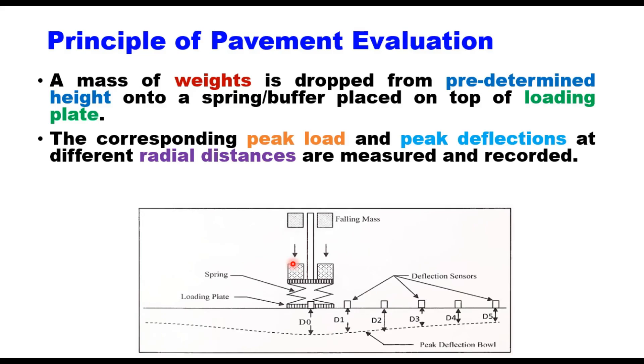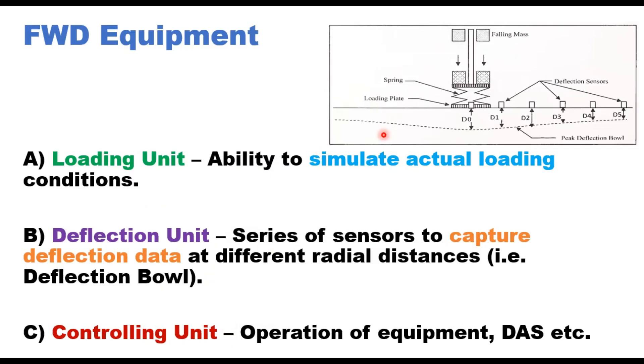The basic principle of pavement evaluation using FWD is that you have a mass of weight which is dropped from a predetermined height onto a spring placed on top of a loading plate and then corresponding peak load and peak deflections at different distances are measured and recorded so that you can draw this peak deflection bowl. It has a loading unit that has the ability to simulate actual loading condition. Deflection unit, a series of sensors to capture deflection data at different distances so that you can capture this deflection bowl and a controlling unit to record all this information.